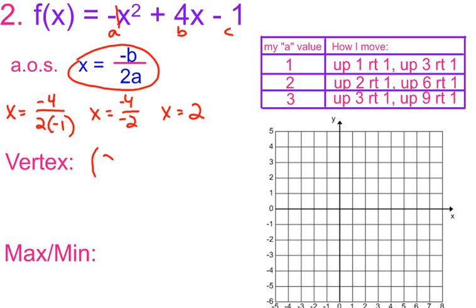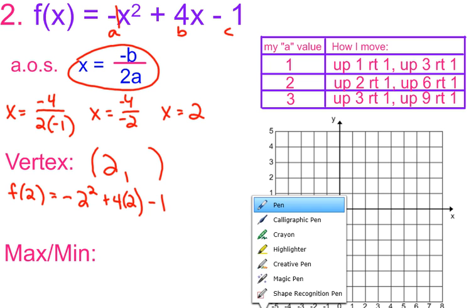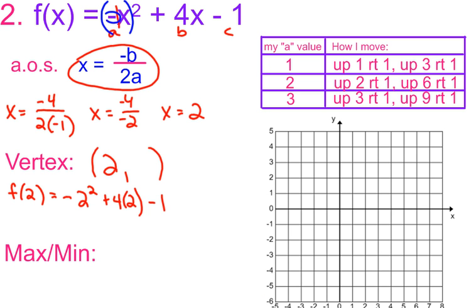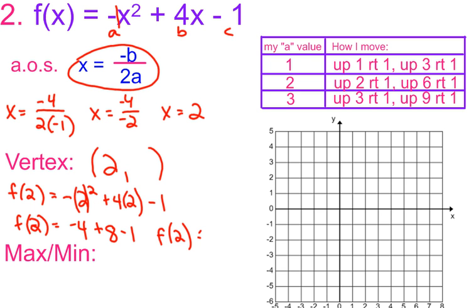My vertex is going to be at x = 2. To find the y-value, I substitute x = 2: f(2) = -2² + 4(2) - 1. Important: there are no parentheses around the negative, so the negative is NOT being squared — it's really just 2² = 4, then multiplied by the negative to get -4. So f(2) = -4 + 8 - 1 = 3.